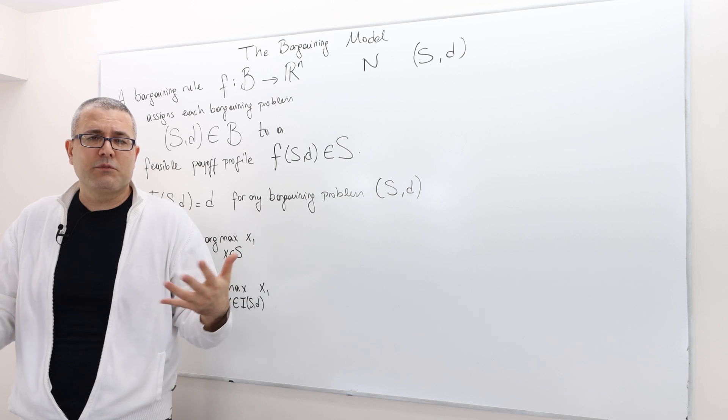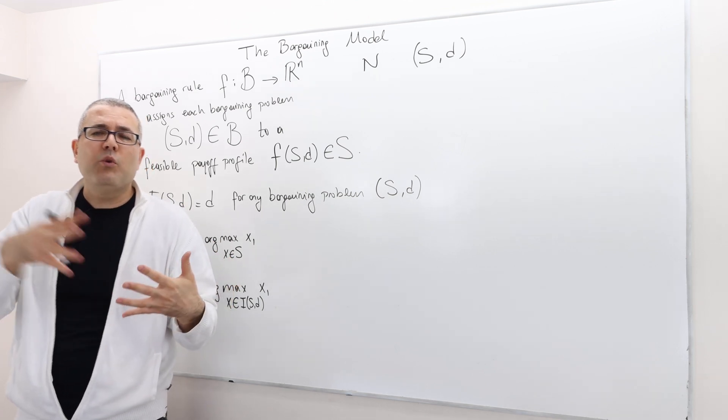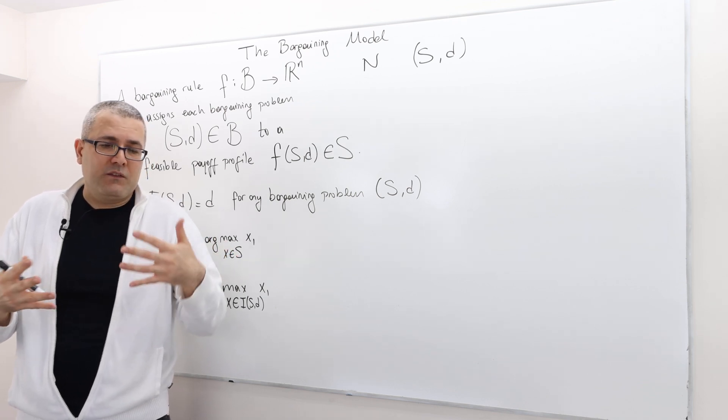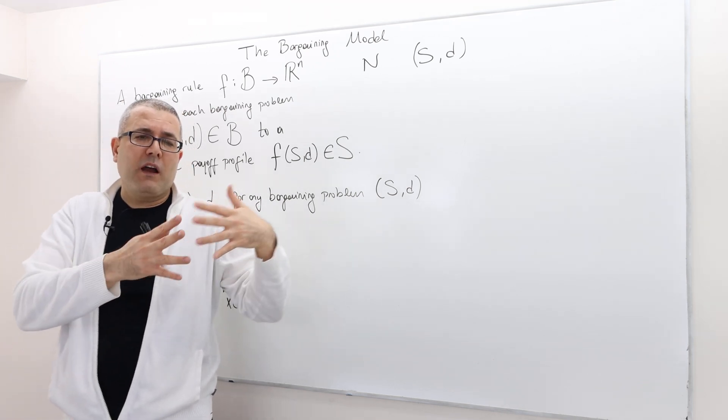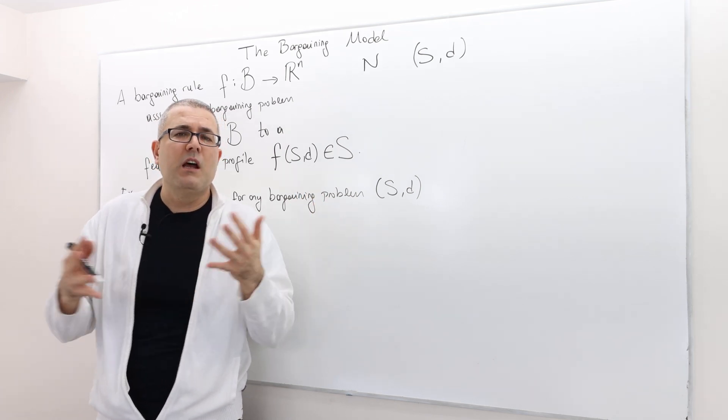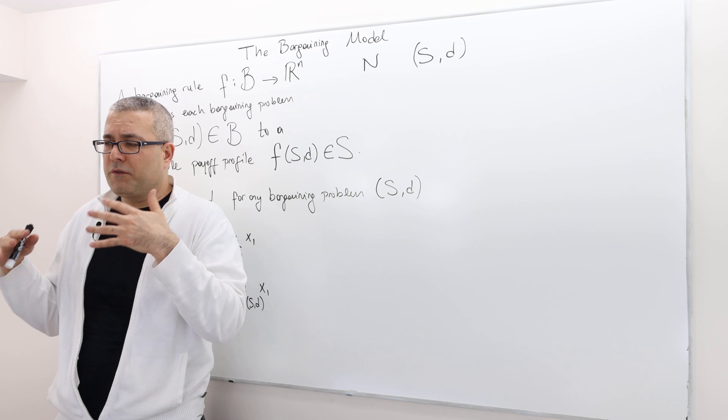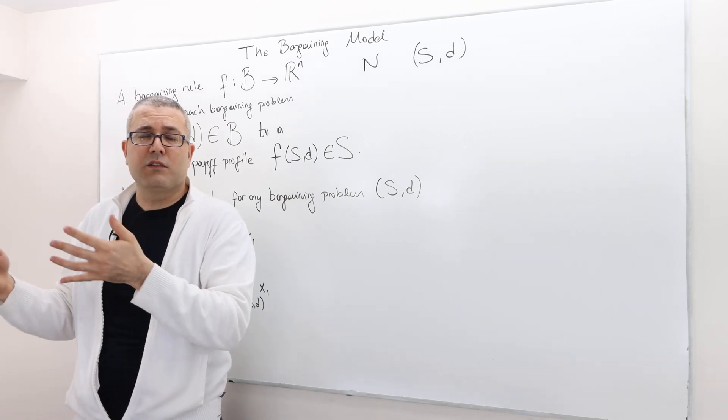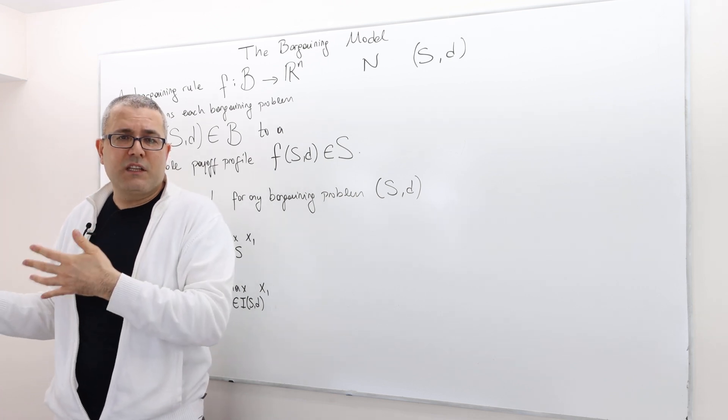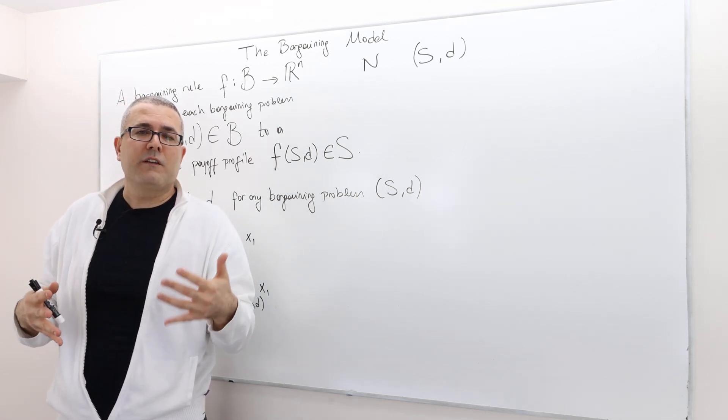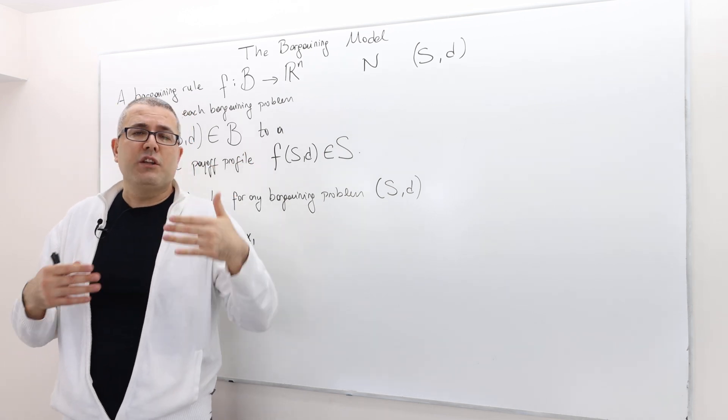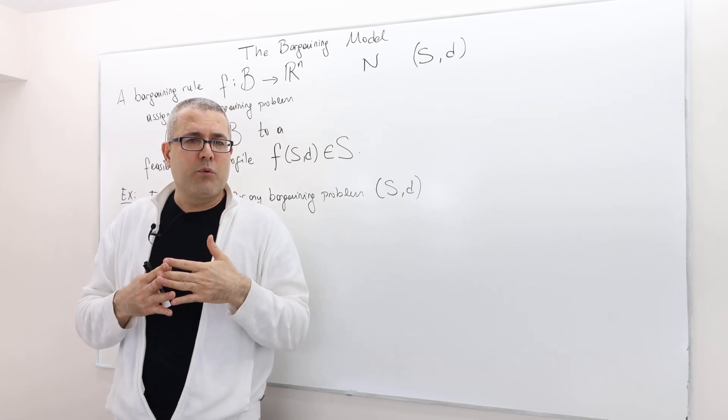And then we judge how well this rule is because a rule may provide very nice, acceptable solutions under some problems, but it may actually end up with very unacceptable, weird solutions or outcomes in other potentially interesting bargaining problems. Therefore, we do not judge the outcomes. We do judge the rules.